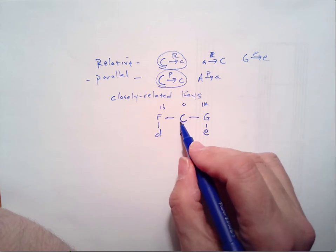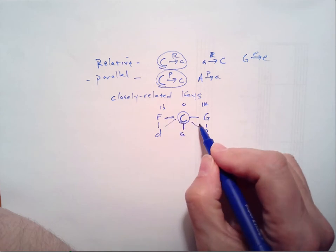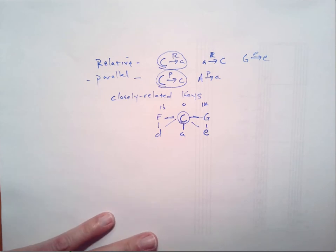So in relation to the key of C, there are one, two, three, four, five closely related keys. These are the keys that are within one sharp or flat.